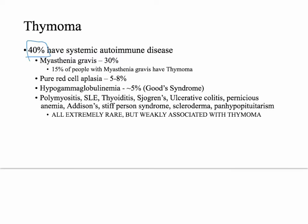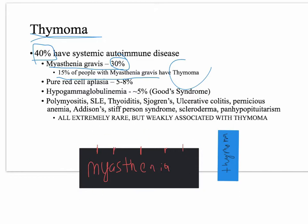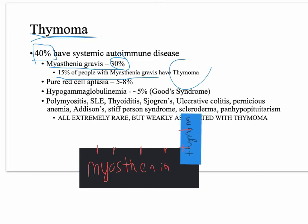40% of people with thymomas have an associated systemic autoimmune disease. The most strongly associated is myasthenia gravis - 30% of thymomas will present with myasthenia gravis, and 15% of people with myasthenia gravis will have a thymoma. So there are more people with myasthenia gravis overall, but out of people with thymomas there is a strong association with it.